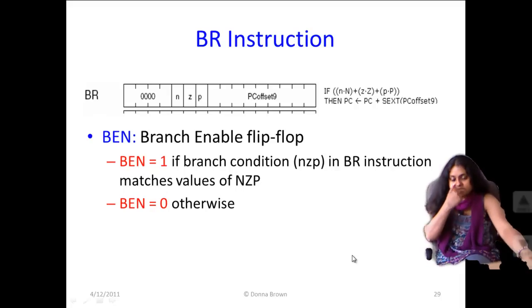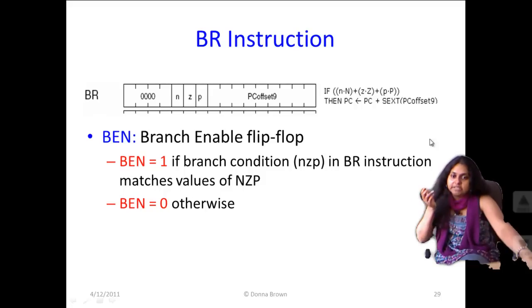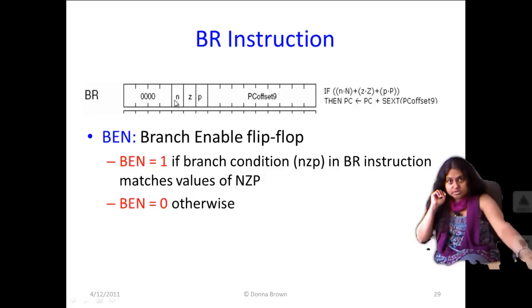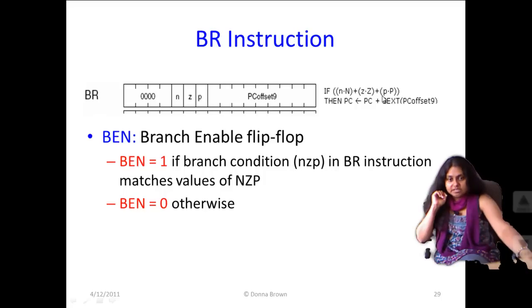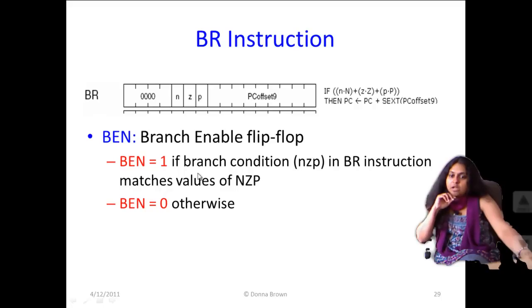For the branch instruction, which is an interesting case and the final example in this lecture, the branch instruction has the structure: opcode 0000, bits n, z, and p, and pc offset 9. The way to interpret this is: if n·N + z·Z + p·P, then PC = PC + sign-extended PC offset 9. This is the register transfer level description of the branch instruction.